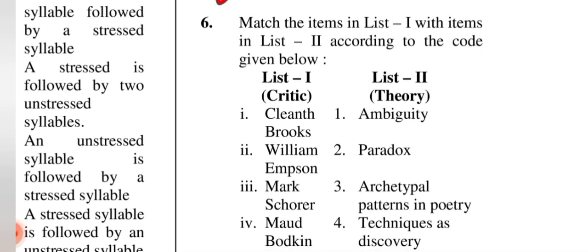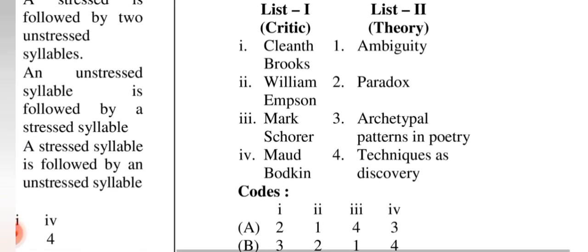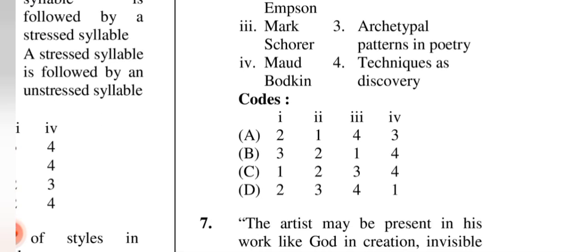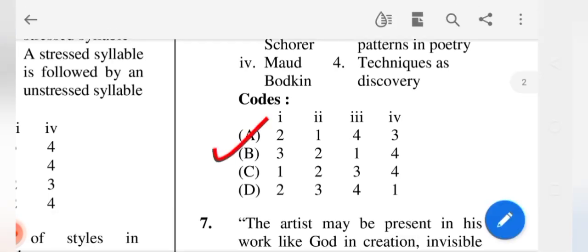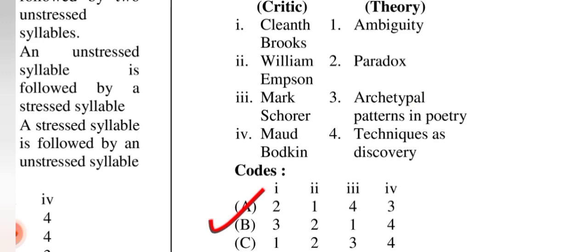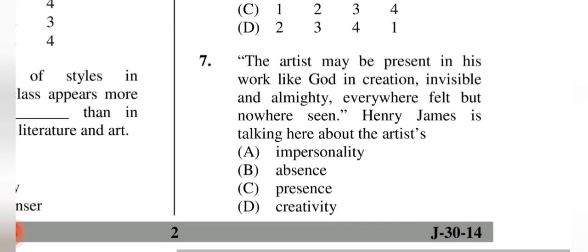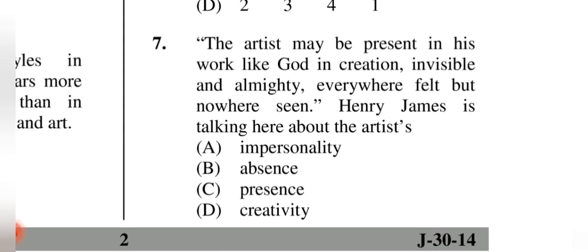Question 6: Match List 1 with List 2. The correct answer is (A): Cleanth Brooks — paradox; William Empson — ambiguity; Mark — score/techniques as discovery. Question 7: 'The artist may be present in his work like God in creation, invisible and almighty, everywhere felt but nowhere seen' — Henry James is talking about what? The correct answer is (A) impersonality.